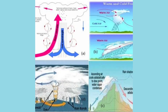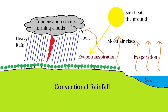Rainfall that occurs in the equatorial region is convectional rainfall. This type of rainfall is common in the tropical region and in the inner part of the continents. In the equatorial region, because of high temperature, convection currents develop in the atmosphere.